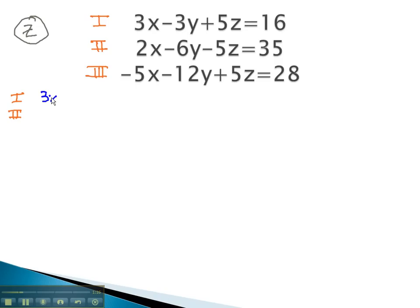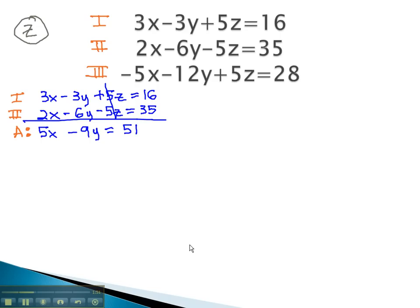Equation 1 was 3x minus 3y plus 5z equals 16. Equation 2 was 2x minus 6y minus 5z equals 35. When we combine these equations together, we've eliminated the z's. We're left with 5x minus 9y equals 51. Notice we've eliminated the z once. Let's call this equation A, the first time we've eliminated z.